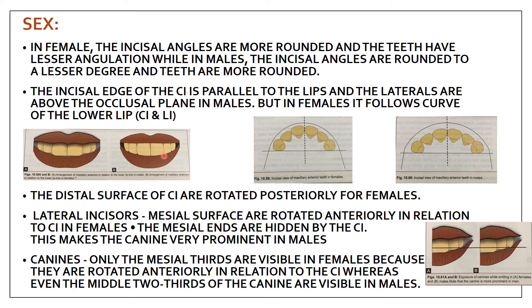The distal surface of the central incisor is rotated posteriorly in females. The mesial surface of the lateral incisor is rotated anteriorly in relation to the central incisor in females, making the canine very prominent in males. Only the mesial third of the canine is visible in females because of the anterior rotation, whereas in males the middle two-thirds of the canine are visible.